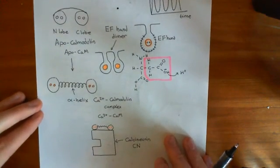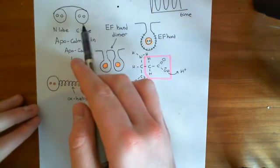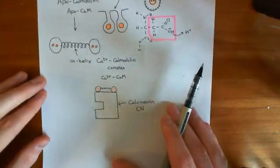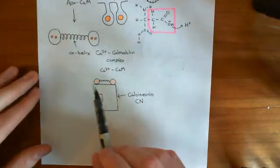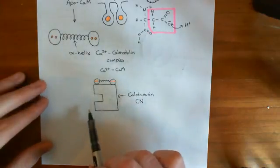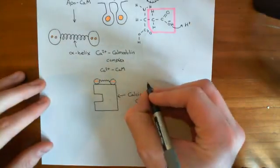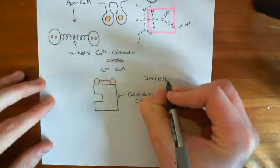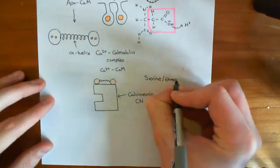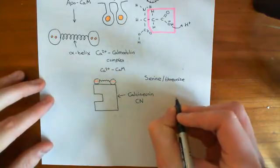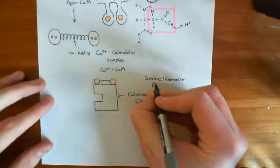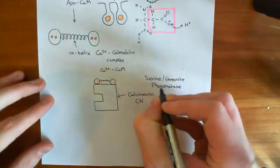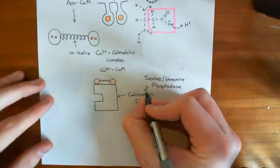Now when calcium goes up in the cytoplasm, calcium is going to bind to calmodulin and create calcium-calmodulin complexes. Calcium-calmodulin complexes bind and activate this enzyme called calcineurin. Now calcineurin is what's known as a serine-threonine phosphatase — it removes phosphate groups which have been added to serine and threonine residues. So this is what calcineurin is.